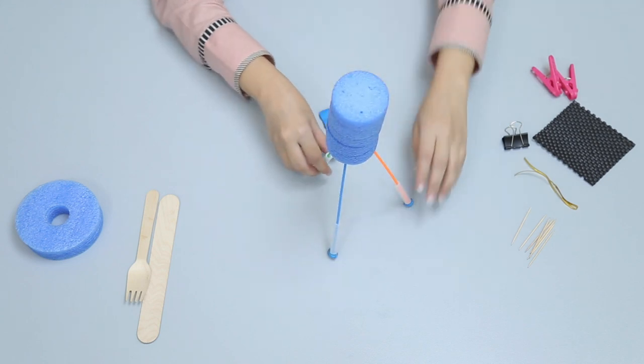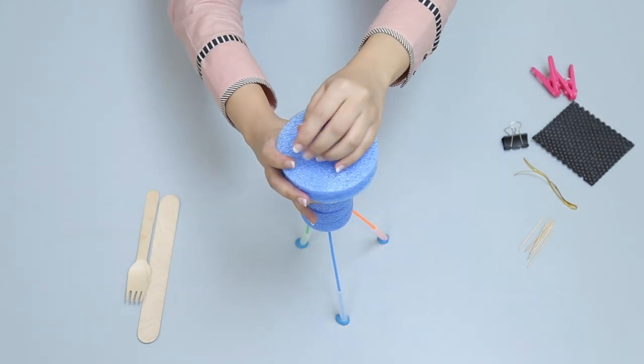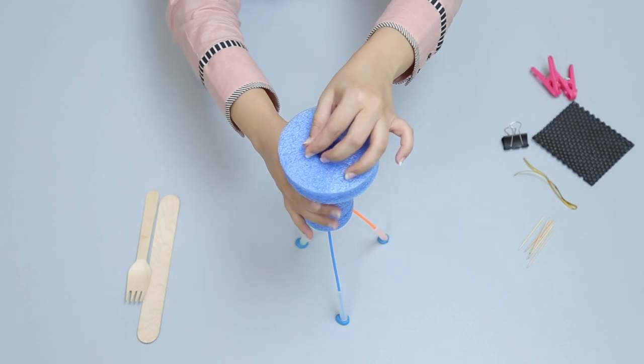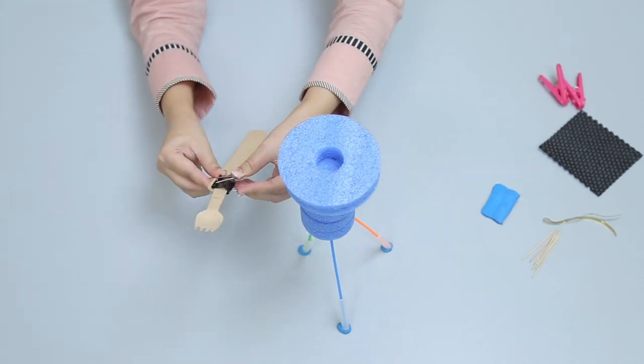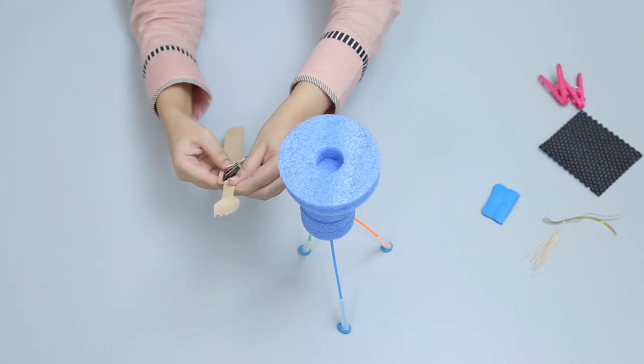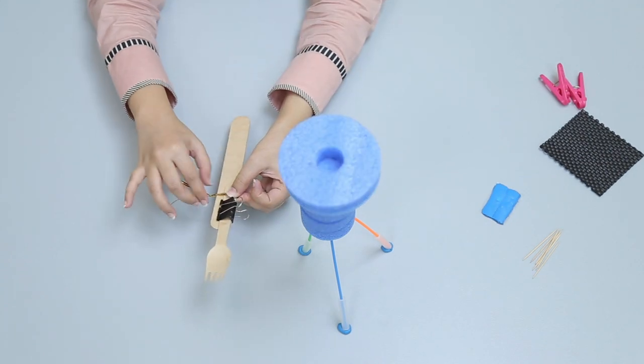Attach foam ring large with hole at the top of large foam piece. Join the craft stick and sport together with foldback clip and tie wire.